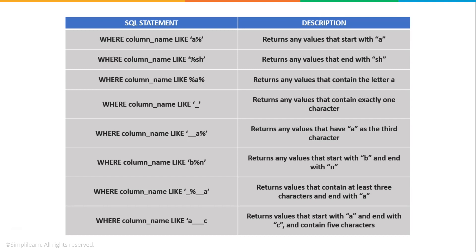Similarly, if you want to find values that end with 'SH', you use '%SH'. If you want to find values that have the character A in any position, you mention the pattern as WHERE column_name LIKE '%A%', which returns any values containing the letter A in any position. You can use the underscore operator similarly — if you want to return exactly one character, you mention a single underscore sign. If you want to find values that have character A in the third position, the query would be WHERE column_name LIKE '_ _ _A%'. You can take a screenshot of these different pattern types by pausing the video.